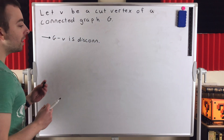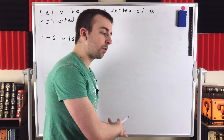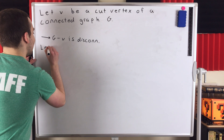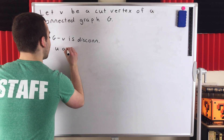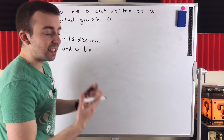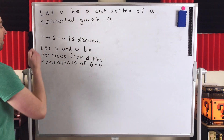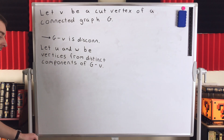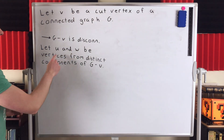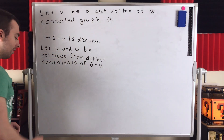So let's take two distinct vertices from those components — one from one component, one from some other component. Let U and W be vertices from distinct components of G minus V. We delete the cut vertex, that gives us G minus V, which is disconnected and has at least two components. Then we take two vertices U and W from distinct components of this disconnected graph.